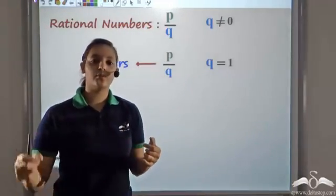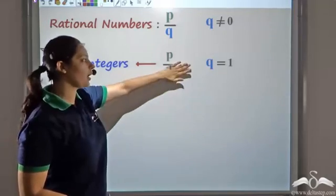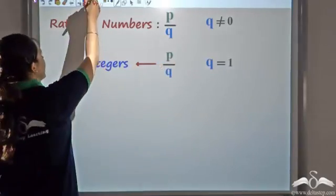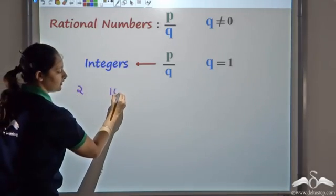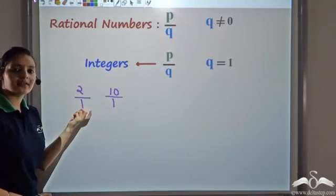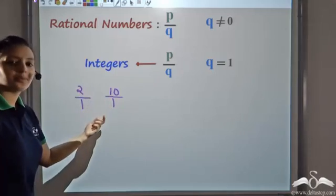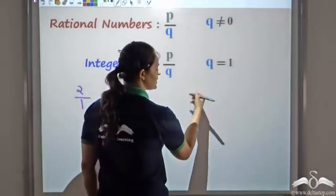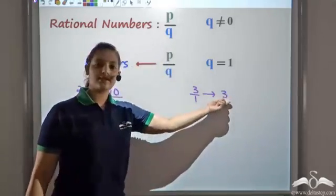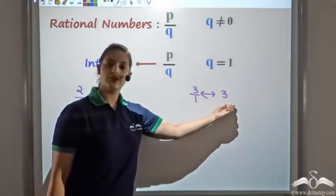Now we said that rational numbers included both integers and fractions. When would this be an integer? When q would be one. So as soon as q is one, the rational number p by q represents an integer. So for example, any integer like 2 or 10 could be written as a fraction — if I make the denominator one, I can write the integer 2 as two by one, 10 as ten by one. Similarly, any fraction with the base one would turn out to be an integer — three by one is the same as 3, the integer 3.